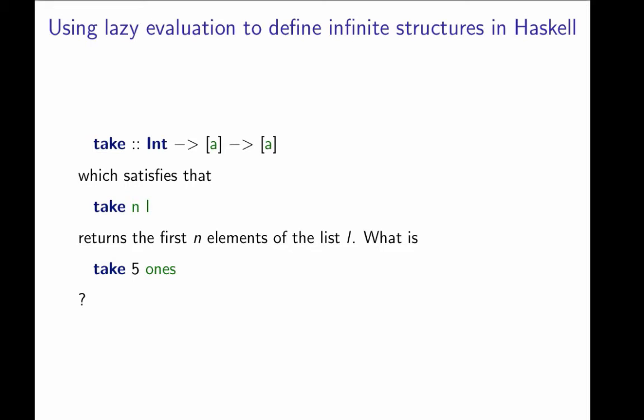There's a function in Haskell in the standard prelude called take. Take is a function of type int to list to list, which satisfies that if we call take with n and l, it will return the first n elements of the list l. So we might ask, what is take 5 of ones? Let's find out.